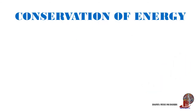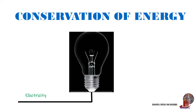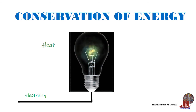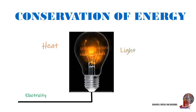As discussed in the previous module, conservation of energy reiterates that energy can neither be created nor destroyed, but it is transformed. Take for example a light bulb: as electrical energy is supplied, that same energy is then converted into heat and light, so nothing was destroyed.